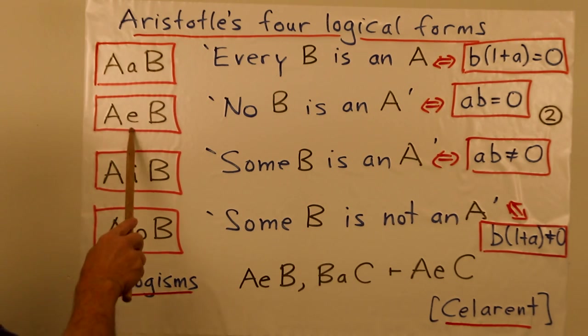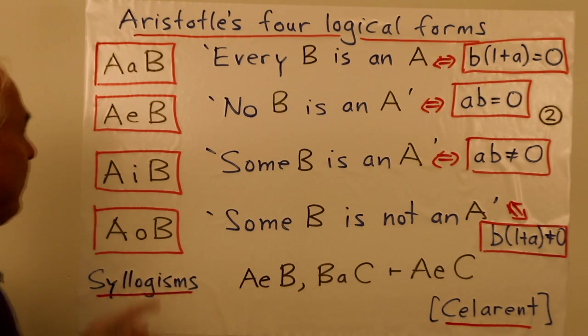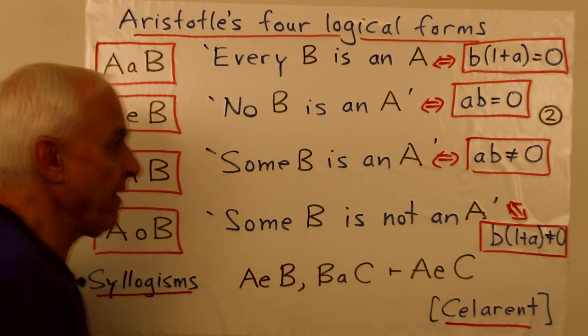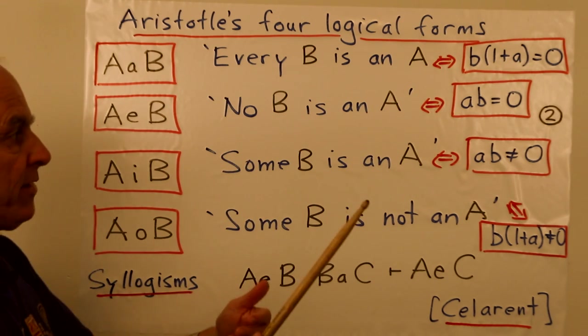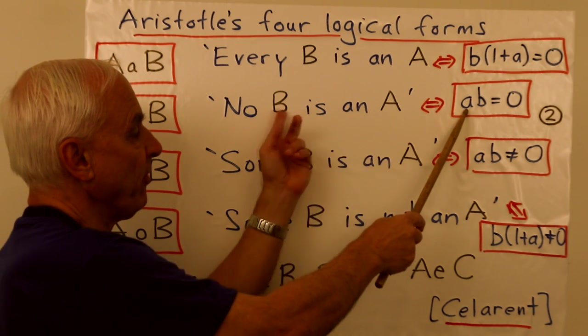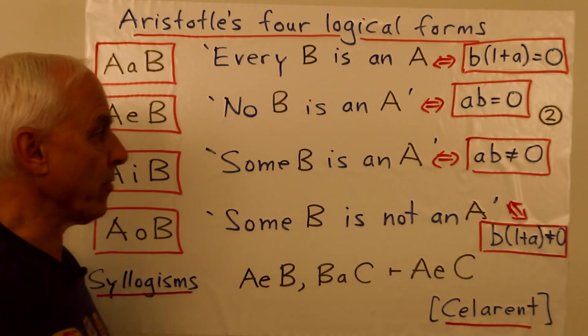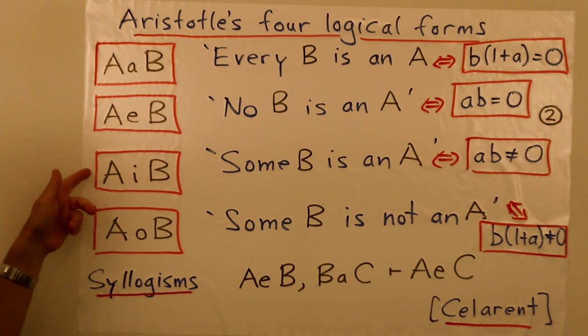The second one has an E in it, and it stands for no B is an A. So A little e B means no B is an A. And algebraically, in the algebra of Boole, that's corresponding to the corresponding propositions here, or vectors A, B, the product is zero.